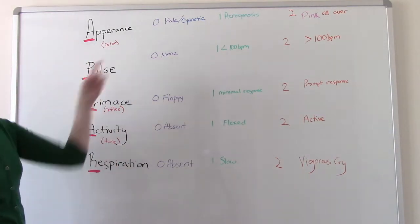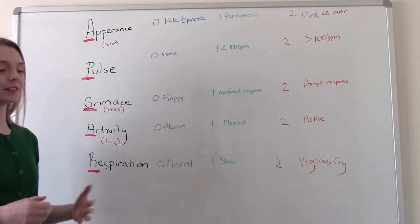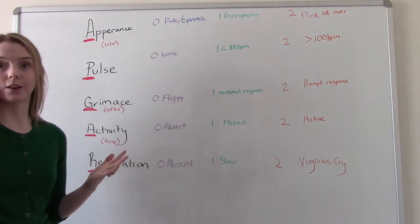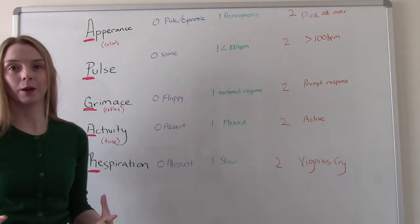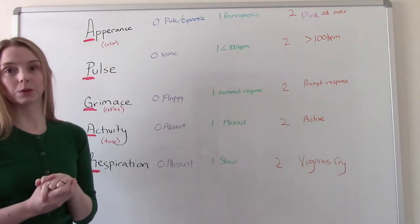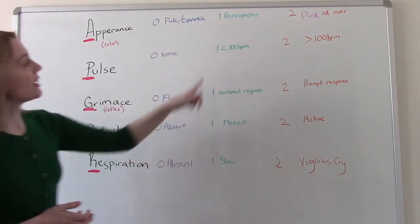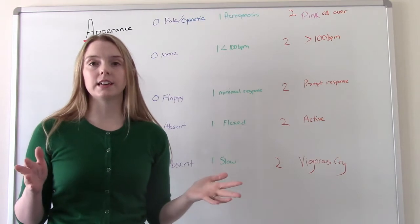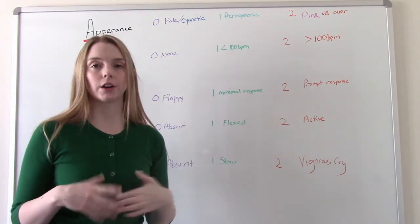A stands for appearance, which is the color of the baby at birth. If you've never seen a delivery, it's normal for babies to come out looking kind of blue — cyanotic. If they're pale or cyanotic, it's a zero. If they have acrocyanosis — where their extremities are blue but their face and body are a normal pink color — it's a one. Acrocyanosis is caused by vasospasms and vasoconstriction from immature circulation, so it's totally normal.